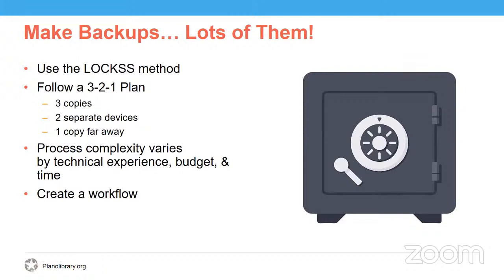One of the ways that you can apply the LOCKS method is called the 3-2-1 backup plan, whereby you save at least three copies of your files, store your files on at least two separate devices — this can be your computer hard drive, an external hard drive, a USB flash drive, or a RAID network — and you store one copy far away from where you live, such as a cloud-based server or your parents' house if it's across the country. Using the 3-2-1 backup plan guarantees that your files will be safe, even if disaster strikes, by ensuring that at least one viable copy of your file persists. Your 3-2-1 backup plan can be as complex or as simple as your technological skills, time, and budget allows.